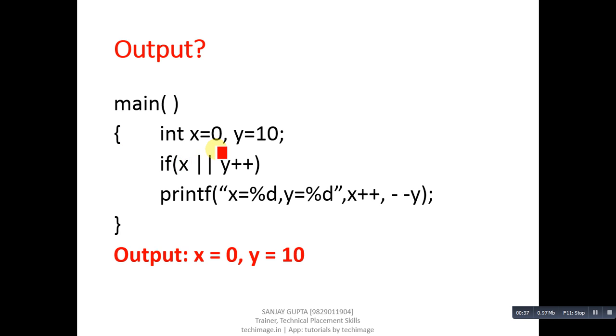Now I am explaining how 0 and 10 will be printed. You can see initially X is 0 and Y is 10, then there's an if condition. If has two expressions which are joined with logical OR - first is X and second is Y plus plus. So X is 0, that's why this condition will be treated as false. But in case of OR, if first condition is false, then second condition will also be checked. So Y plus plus is written here. Y is 10, so plus plus will be performed later on. Y is 10, 10 means true because it is a nonzero value.